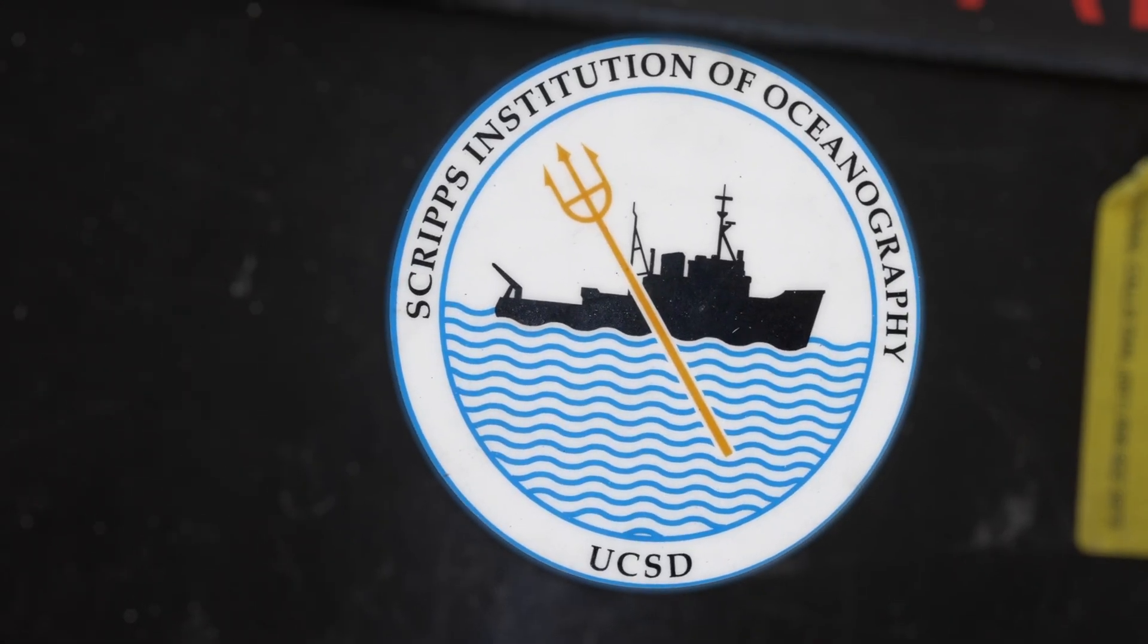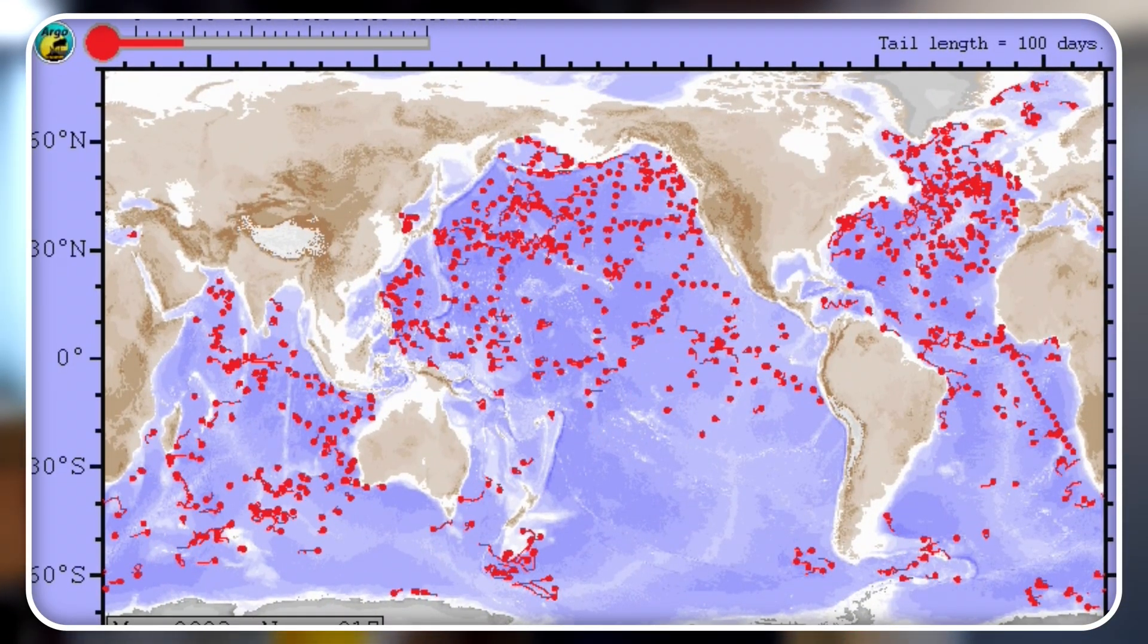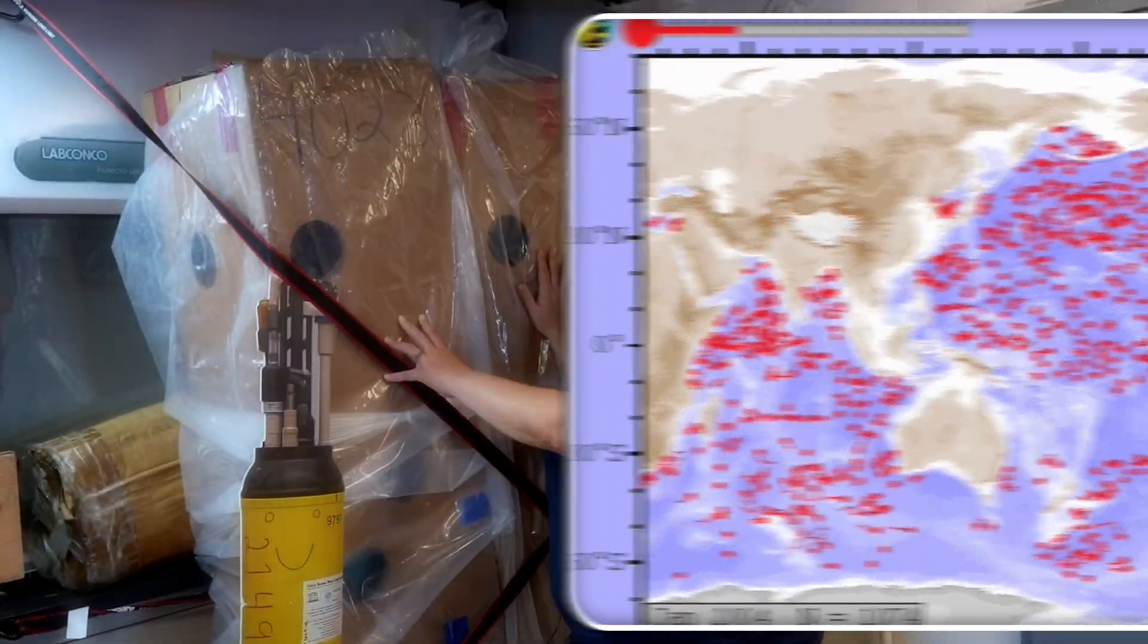My name is Melissa Miller. I work at Scripps Institution of Oceanography as a staff research associate on the GOBI-GC and SOCOM float programs. The Argo program is a much bigger program than just what we're working on. There's like 4,000 floats all around the global oceans.